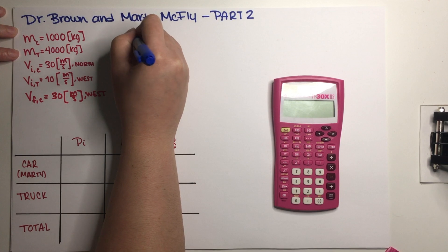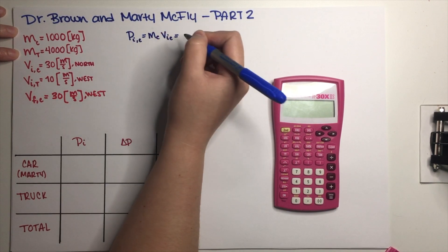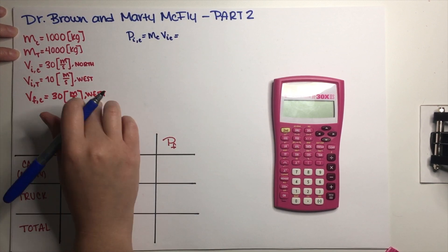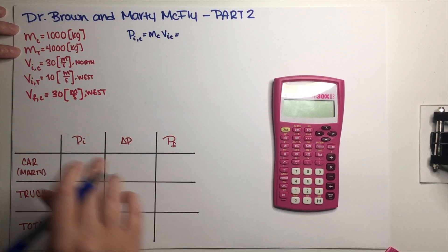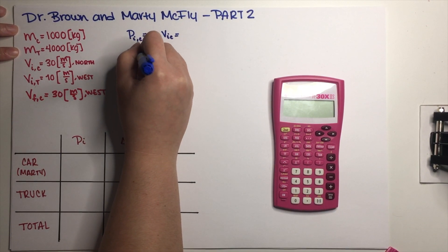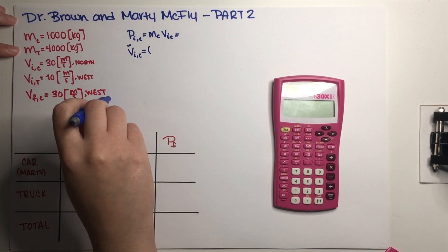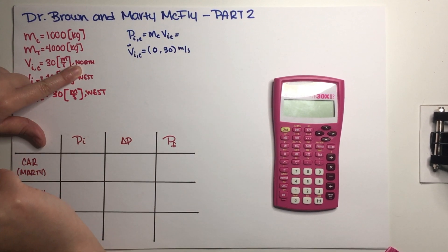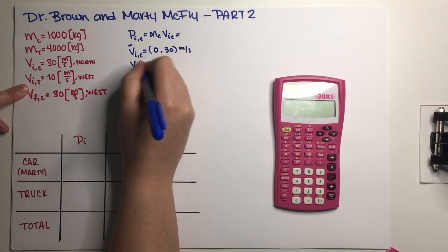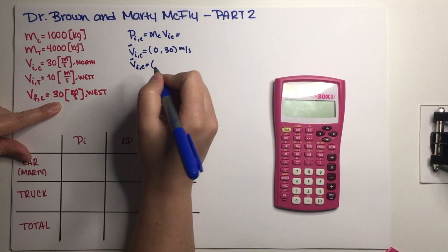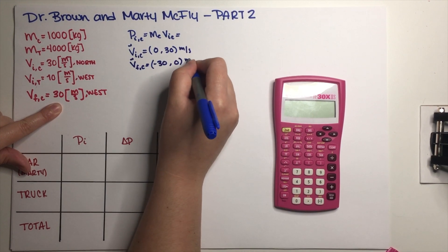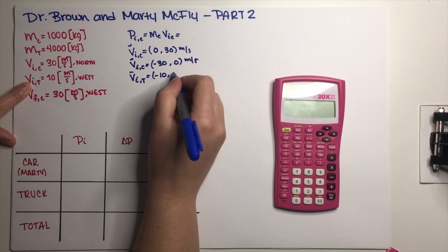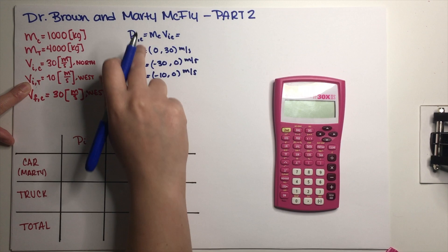The initial momentum of the car is mass times initial velocity. These three vectors are given in magnitude and direction, but I want to separate them into x and y components to fill in the momentum chart. The car's initial velocity is 30 meters per second going north, so that's (0, 30) m/s. The car's final velocity is 30 m/s going west — west is the negative x-axis — so that's (-30, 0) m/s. The truck's initial velocity is 10 m/s going west, so that's (-10, 0) m/s.